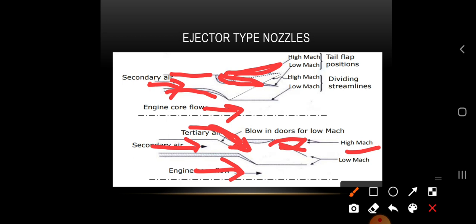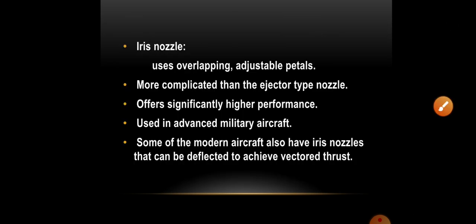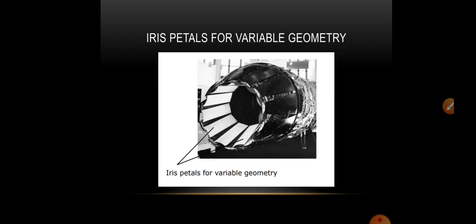Iris nozzles use overlapping adjustable petals and are more complicated than ejector type nozzles. They offer significantly higher performance and are used in advanced military aircraft. Some modern aircraft also have iris nozzles that can be deflected to achieve thrust vectoring.